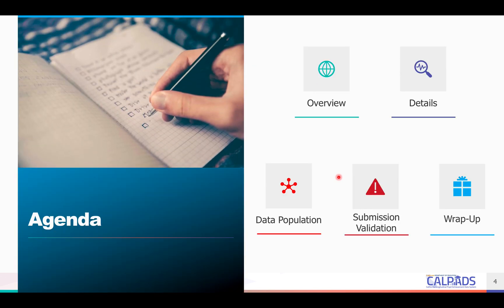And lastly, resolve submission validation errors and warnings with ease by consulting the error list and the file specifications documents. Here's the agenda for the training. We will start with an overview of the submission, then discuss the details of the business rules related to student information, spend some time on how data is reported in CALPASS, discuss some common submission error validations, and wrap up with important reminders and references.